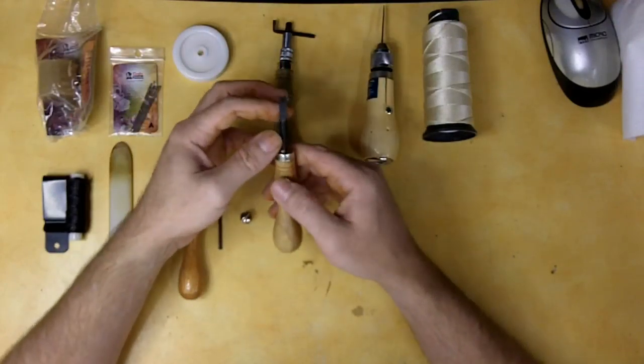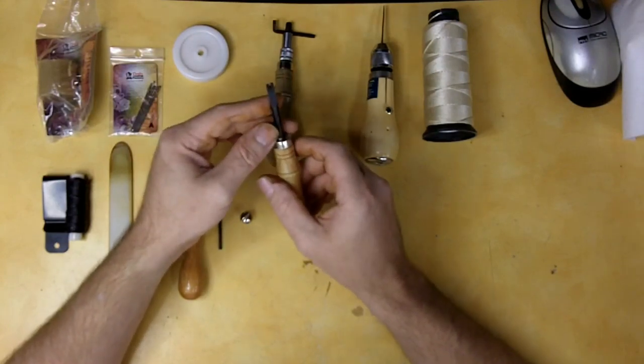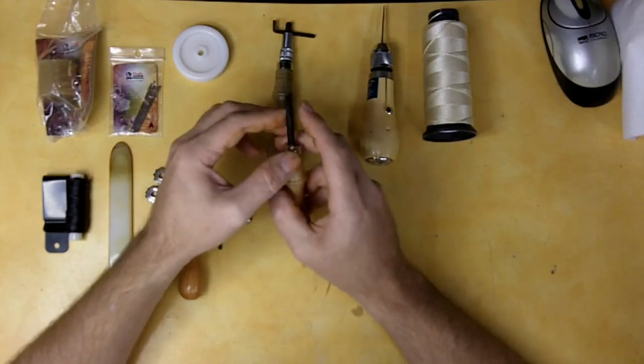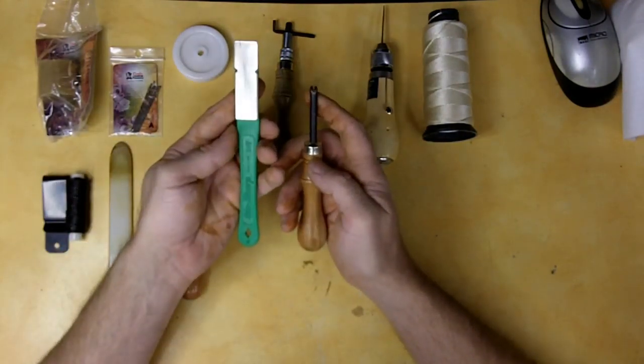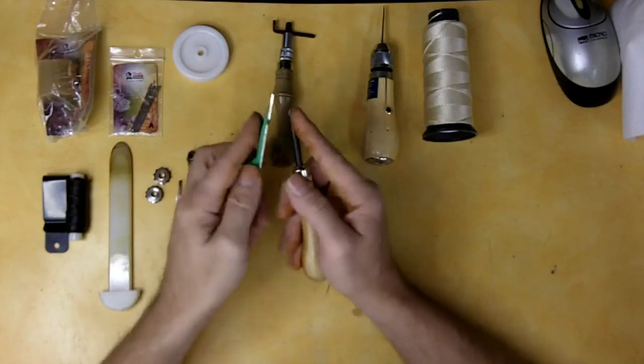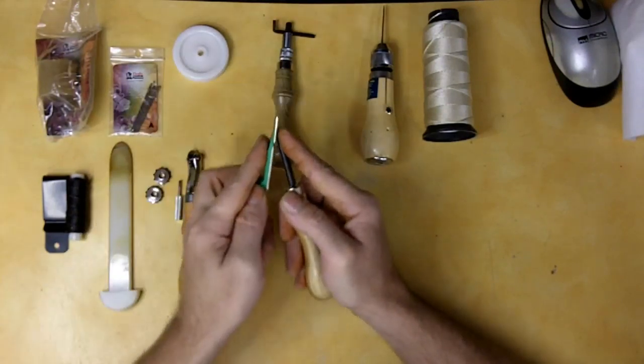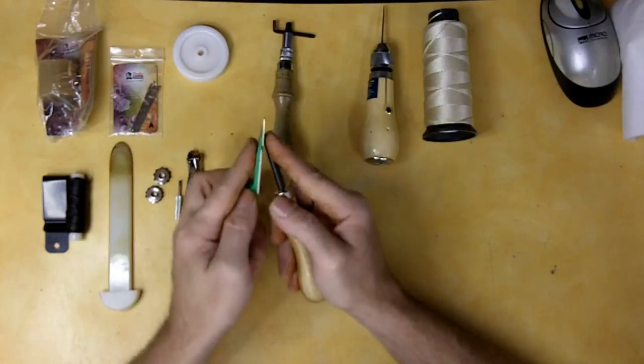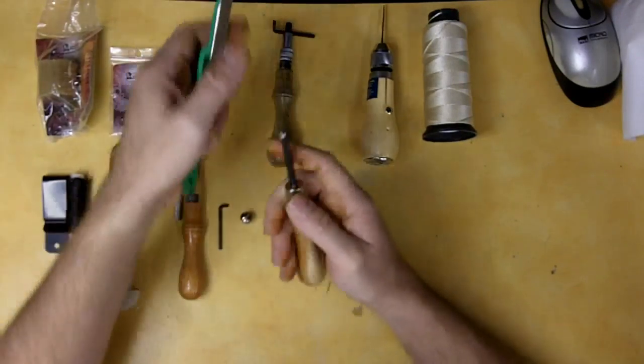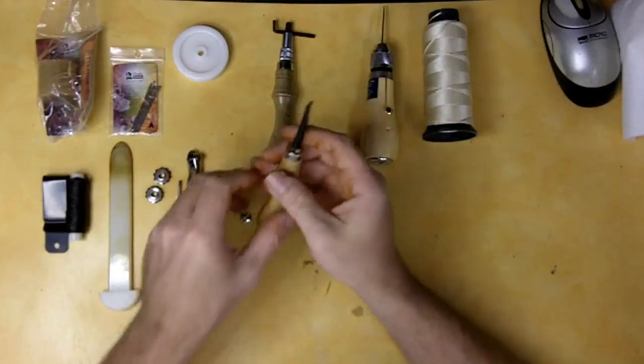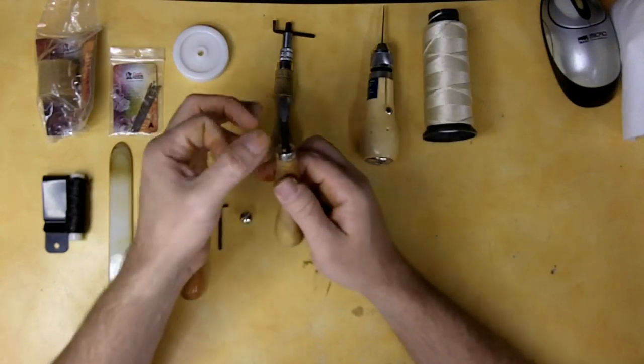The edge beveler, surprisingly enough, does work quite well, but not without sharpening it though. To sharpen it, I haven't quite finished, I just kind of did it. I just took a fine diamond stone, held my finger here, and just worked that edge to try to get the rough grinding marks out. I'll eventually strop this on some leather to get a nice keen edge, but it does work. That, in its own right, is worth the $10, because I think they're about $15 from Tandy.